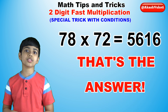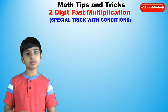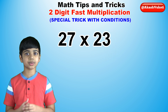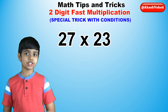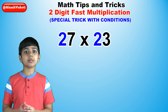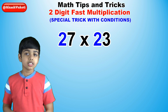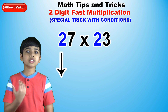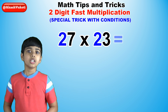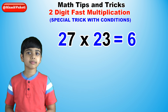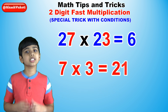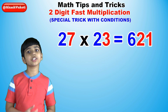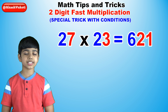Now that we know this, let's move on to some more problems. Let's do 27 times 23. Multiply the tens digit, 2, by the number that comes after it. The number that comes after 2 is 3, so 2 times 3 is 6, which is our first digit. 7 times 3 is 21, which are our last two digits, giving 621 as the answer.